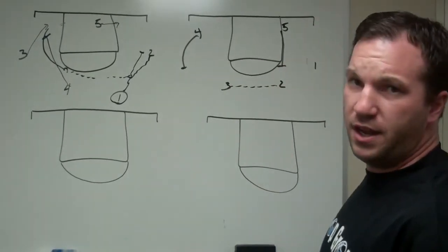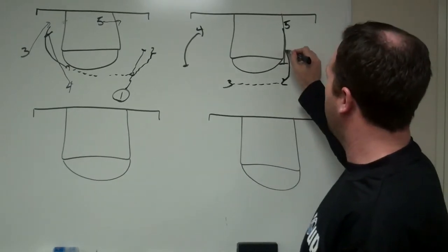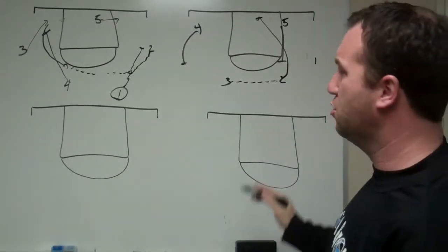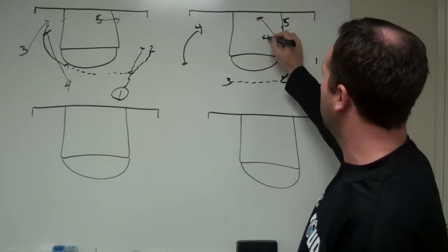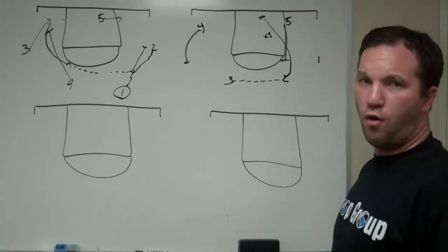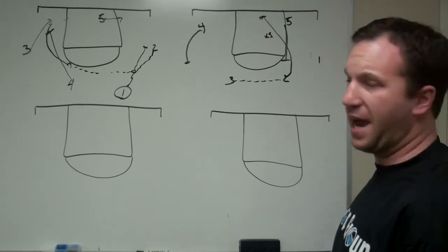5-man will sprint into a UCLA back screen. 2-man will go hard for the lob. As soon as that happens, X5 will really look to help. And the 3-man will ball fake, even if 2 is not open, to get X5 to bite on that back screen.